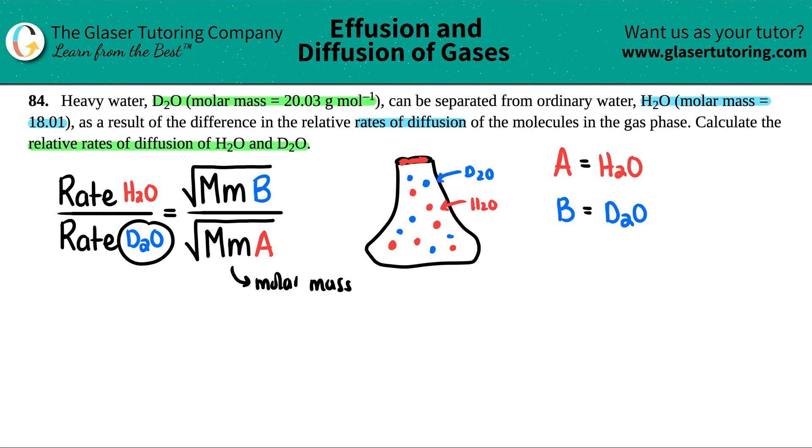So if you put D2O on the bottom, you're putting the molar mass of D2O on the top. So let's just write that down. This would be D2O. And then if you put H2O on the top, the molar mass of H2O has to be on the bottom.